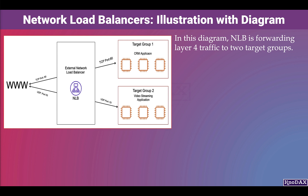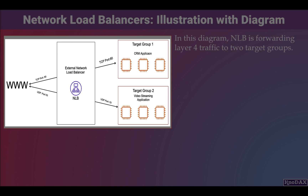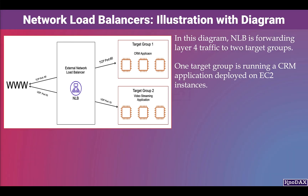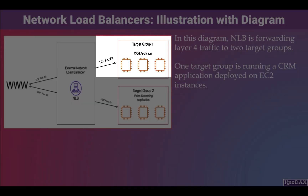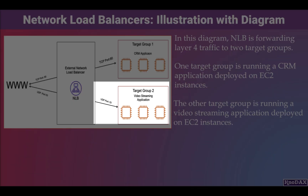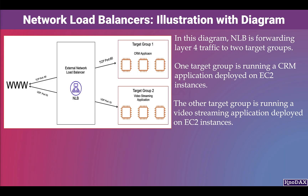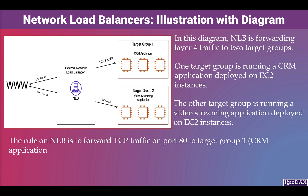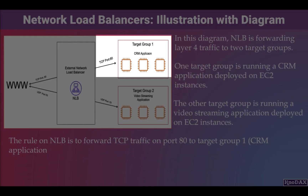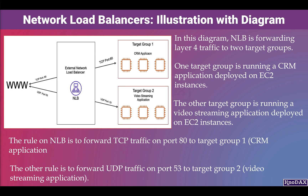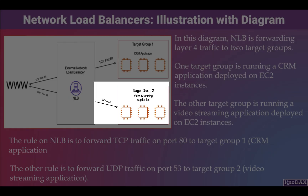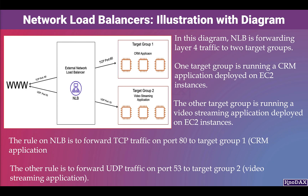Let's understand the Network Load Balancer concept further with the help of a diagram. In this diagram, the Network Load Balancer is forwarding Layer 4 traffic to two target groups. One target group is running a CRM application deployed on EC2 instances, and the other is running a video streaming application on another set of EC2 instances. The rule on the NLB is to forward TCP traffic on port 80 to target group 1, running the CRM application, and to forward UDP traffic on port 53 to target group 2, running the video streaming application.